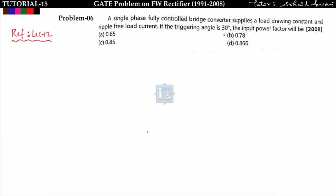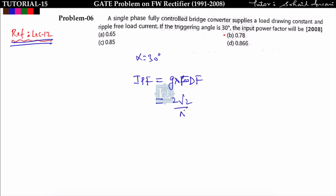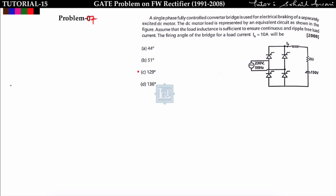Next problem: a single-phase fully controlled bridge converter with constant ripple-free load current and α = 30°. Input power factor = g × fundamental displacement factor, where g = 2√2/π and fundamental displacement factor = cos α. So power factor = (2√2/π) × cos 30° = 0.78. Option B is correct.